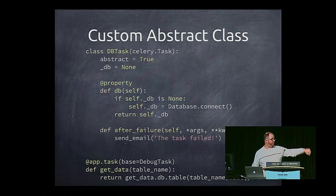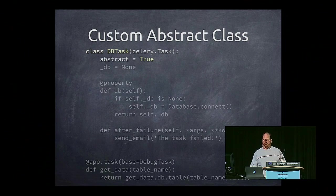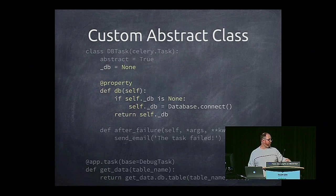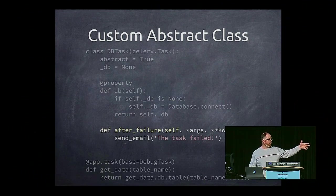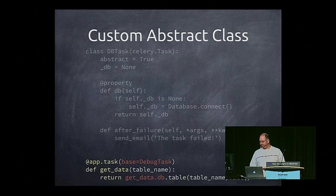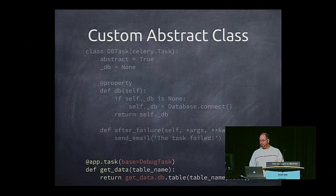Here's an example of a custom abstract class. All you have to do is import CeleryTask, make that your parent class, and set abstract equals true. Then you set up a property — in this case, I wanted to be able to access it if it's already connected, go ahead and use that one, otherwise build a new one. I also added an after_failure handler — if it failed, I want an email to let me know. Here's an example of calling it: you use base equals debug task, and then getData.db is utilizing the db to get the information needed.